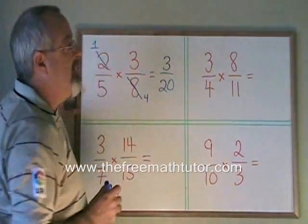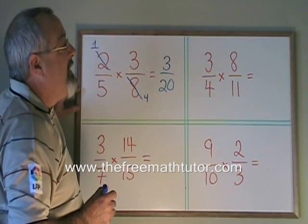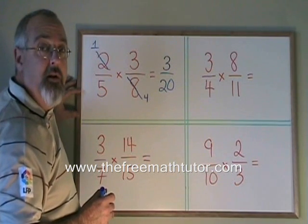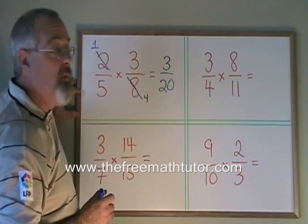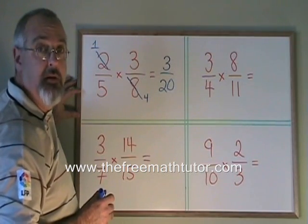Over here, we have 3 quarters times 8 elevenths. The 4 and the 8 share a common factor of 4. And one is on the top while the other is on the bottom. So we can cancel.